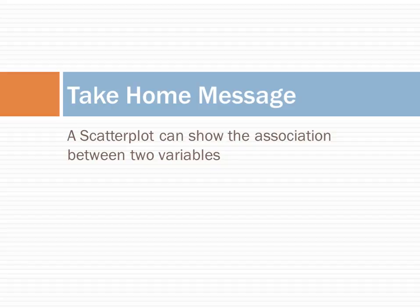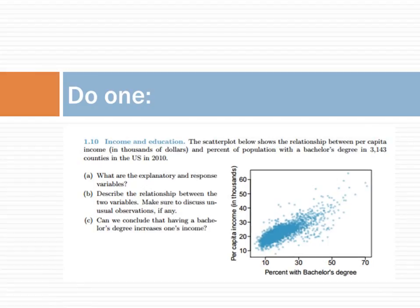The take home message before this lecture was that a scatterplot can show the association between two variables. Let us see if you have understood the relationship between two variables and how to interpret scatterplots.